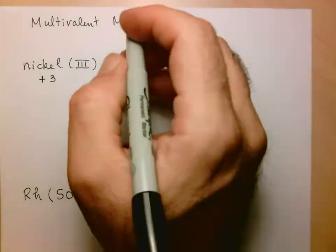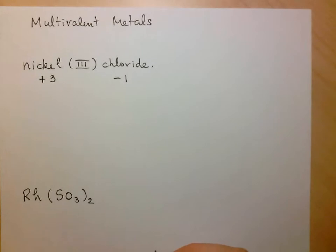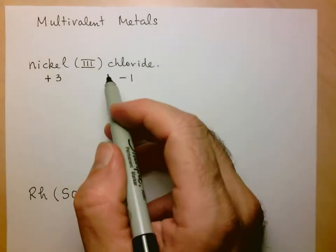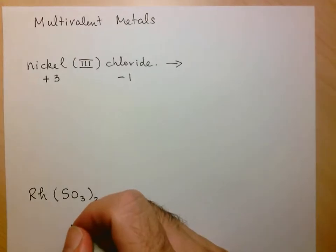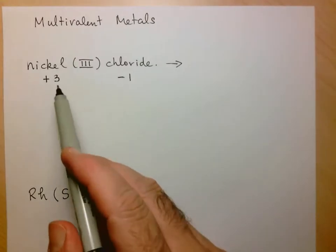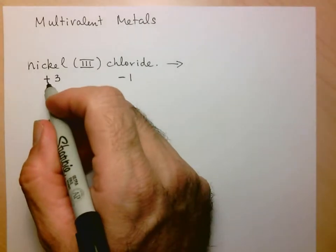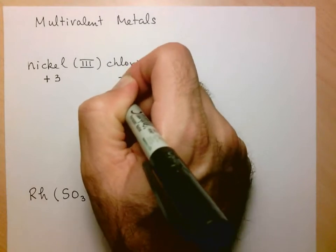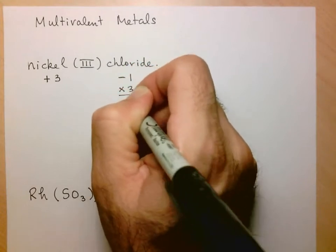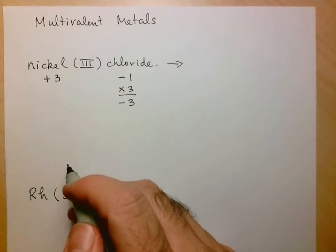Notice here I'm doing exactly what I did earlier when I had a binary compound. So now in order to know how many of each element I need, I need to balance out the charges. So here, this has a charge of plus 3 minus 1, so I can see that I'm going to need 3 chlorides to get to a charge of minus 3 to offset the charge of plus 3.